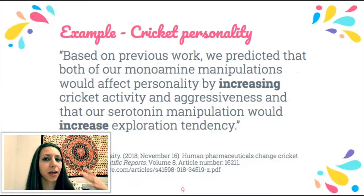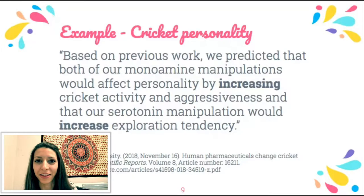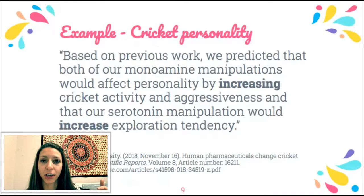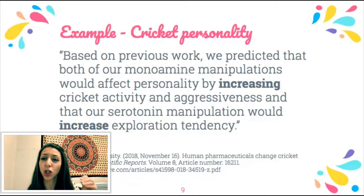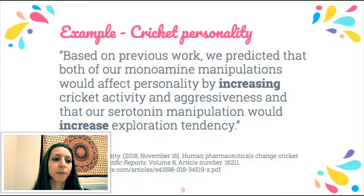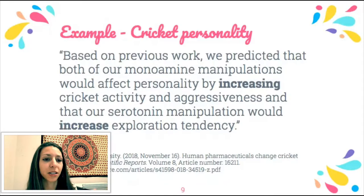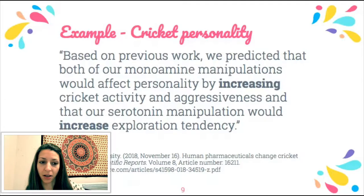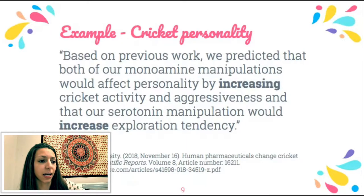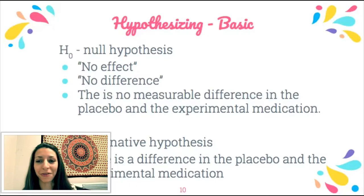From their published paper: 'We experimentally explored how personality was influenced by alterations in two monoamine systems — dopamine and serotonin — using ropinirole and fluoxetine, two common human pharmaceuticals.' When you read scientific literature you may not see a hypothesis written as an if-then statement. They wrote: 'Based on previous work, we predicted that both monoamine manipulations would affect personality by increasing cricket activity and aggressiveness, and that our serotonin manipulation would increase exploration tendency.' Notice the treatment, the predicted outcome, and that it is measurable.